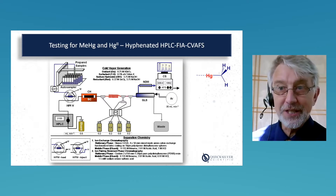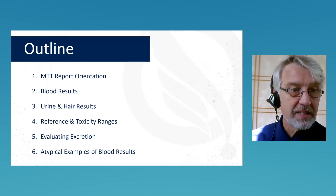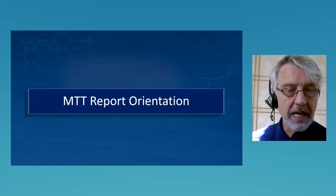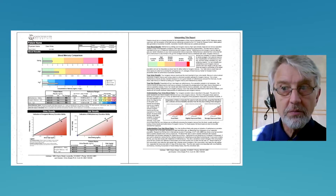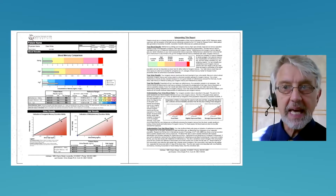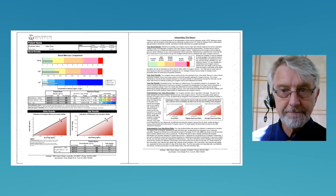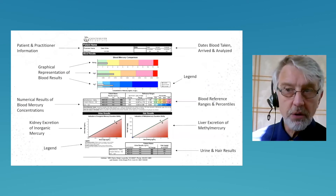So here's an outline — let's just dive in. We're going to take a little tour around the Mercury Tri-Test. The results come back as two pages. The first page presents the results, and the second page has some discussion. Please read that second page when you get your first few results — it will help explain things and make it clearer. The results are actually presented on page one, and we're going to go into all these different components and what information you can derive from them.